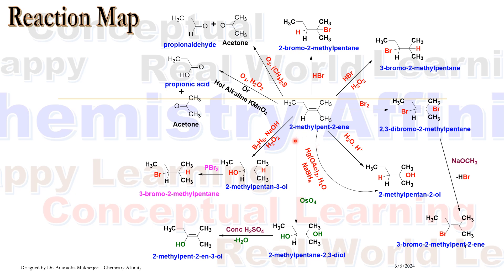Here I have taken 2-methyl pent-2-ene. When 2-methyl pent-2-ene is treated with HBr it follows Markovnikov's addition. Br attacks to the more substituted carbon and hydrogen attacks to the less substituted carbon. So we are getting 2-bromo-2-methyl pentane.